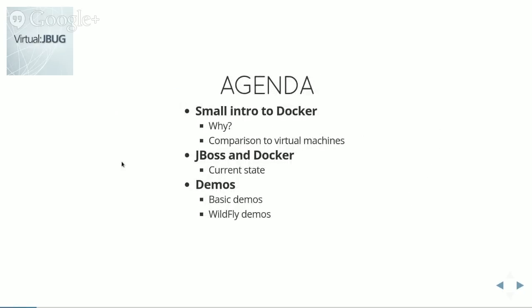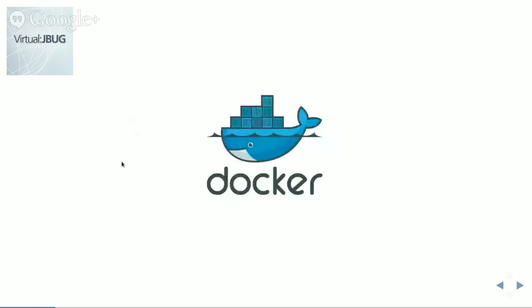Today's agenda is simple. First, a small introduction on why there was a need to create a tool like Docker. I want to compare it to virtual machines, because people try to think about Docker containers as virtual machines, which is not really true. Then I'll talk about the current state of JBoss middleware projects and Docker — what images we have — and then dive into demos. Some basic Docker command demos, and then six or seven WildFly demos.